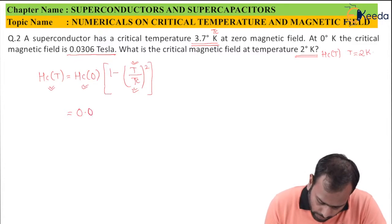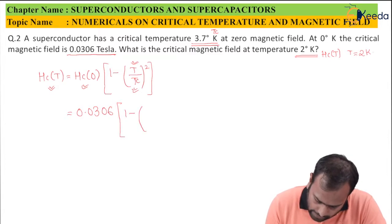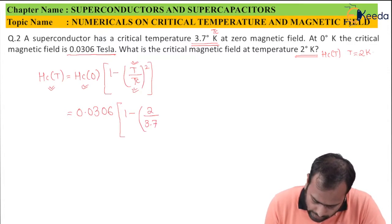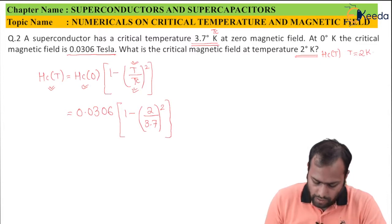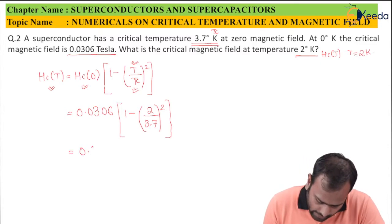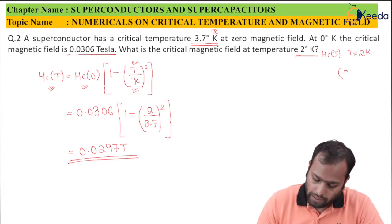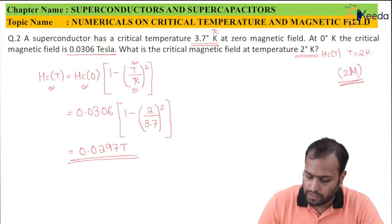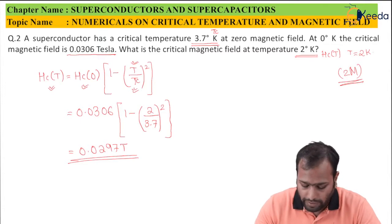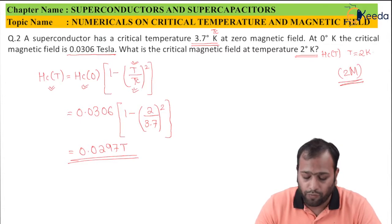For Hc(0), we use 0.0306 × [1 − (2/3.7)²]. Plugging in the values in your calculator, you'll get the answer as 0.0297 Tesla. This is the final answer. Note that this question was asked for two marks in a university exam, so it's a very easy formula to remember and easy to fetch these marks.